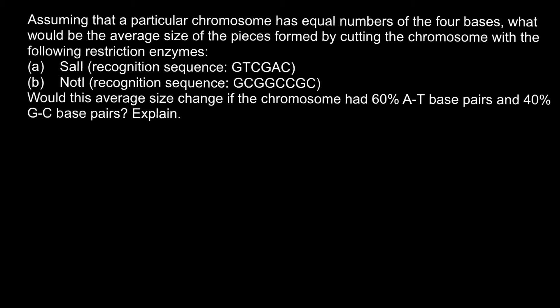Hello and welcome to Nikolai's genetics lessons. Today's problem is: assuming that a particular chromosome has equal numbers of the four bases, what would be the average size of the pieces formed by cutting the chromosome with the following restriction enzymes? Here are the two restriction enzymes and their recognition sequences. The second question asks whether this average size would change if the chromosome had 60% AT base pairs and 40% GC base pairs, and you have to explain.